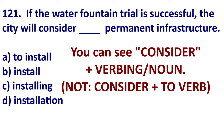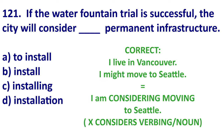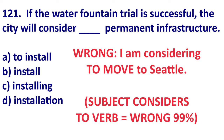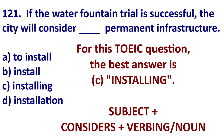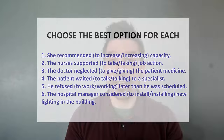You will not use consider plus to-verb. So: I live in Vancouver but I might move to Seattle — I am considering moving to Seattle, not to move. I am considering leaving Vancouver, not to leave. So for this TOEIC question, we will choose 'installing' because after 'consider,' we don't use the to-verb — we use the gerund. For a little more practice with this, let's do a quick quiz with infinitives and gerunds.